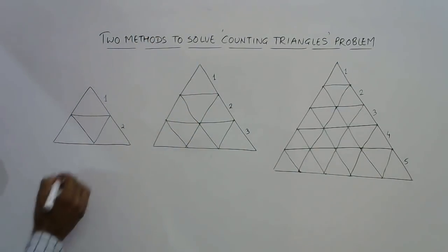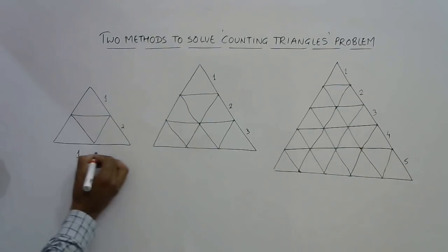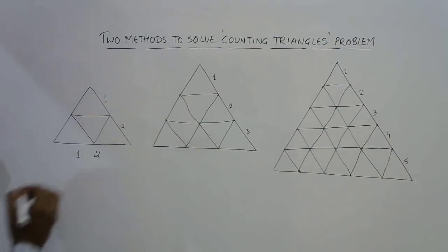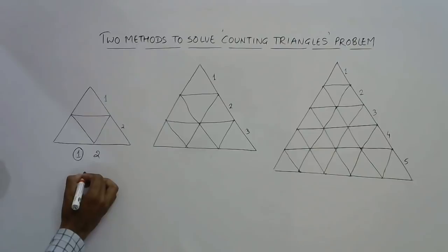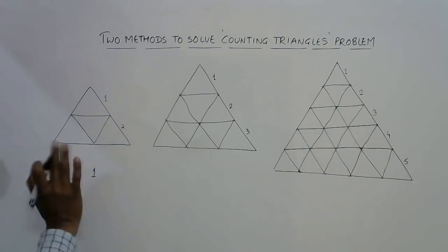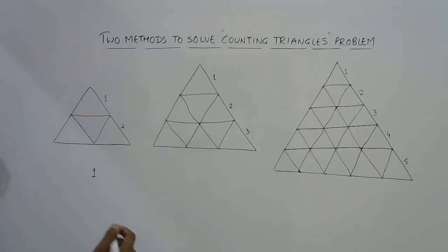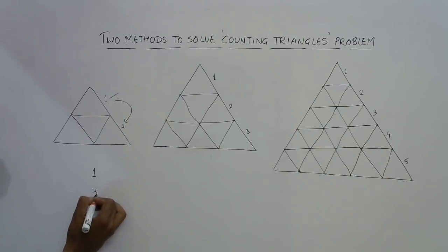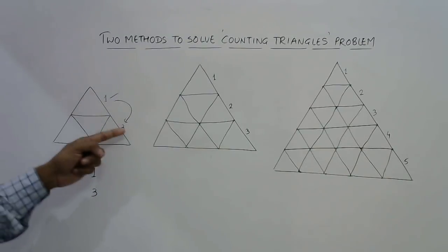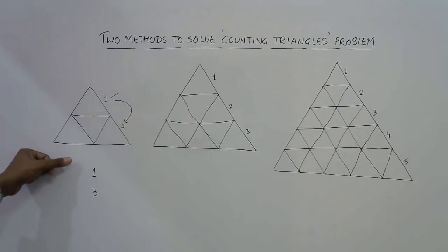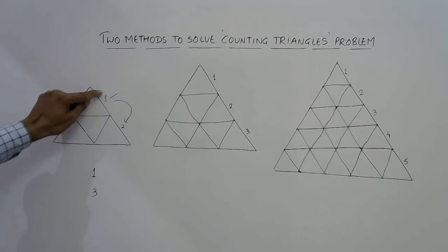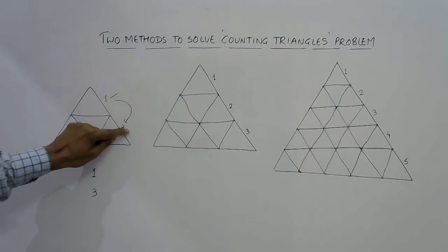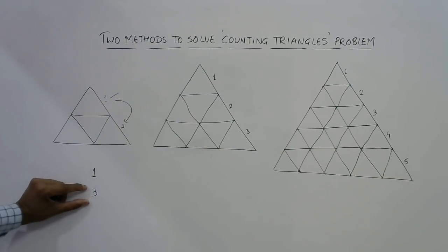So once you know the generalized method of finding the total number of triangles, then the magnitude of this figure will not matter. You can solve it in 5 to 6 seconds time only. How do we do this? Now see these are numbers 1 and 2. So the first number 1 is to be written as it is. So I will not write this here just to avoid any confusion. So this number 1 will come as it is. Now 1 plus 2 gives you 3. So we have only two numbers. So we have to write as if we are writing the cumulative frequency. The first number comes as it is and then the next number gets added to this to give you this sum.